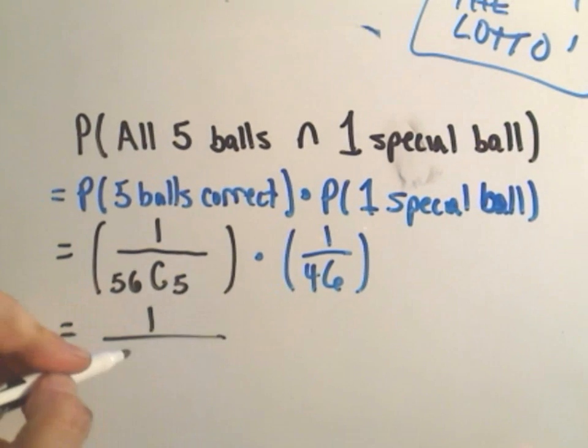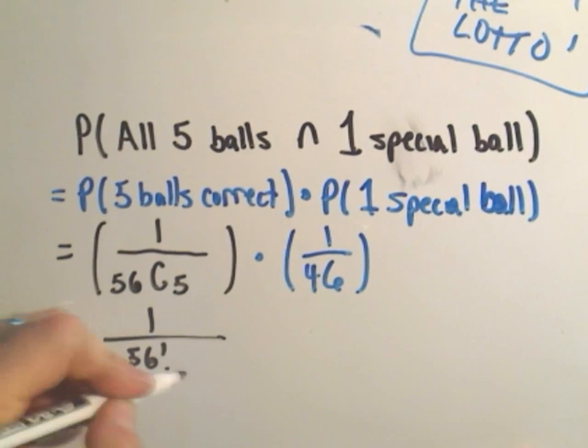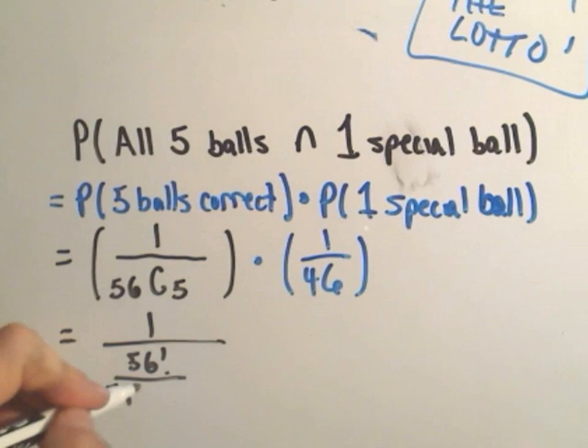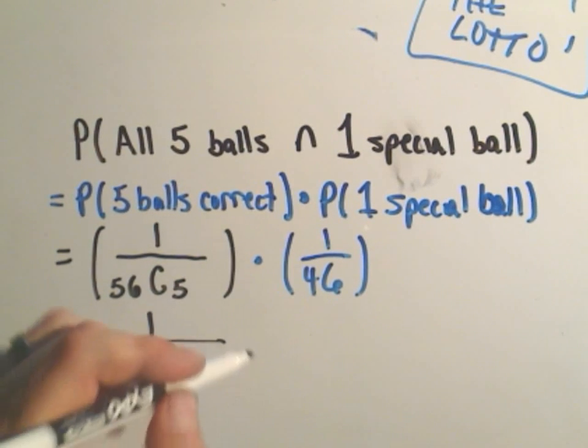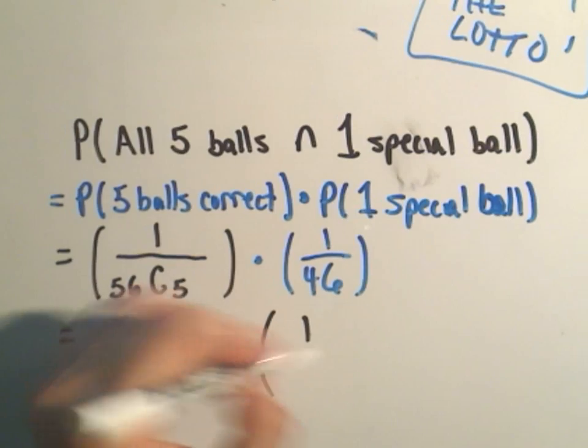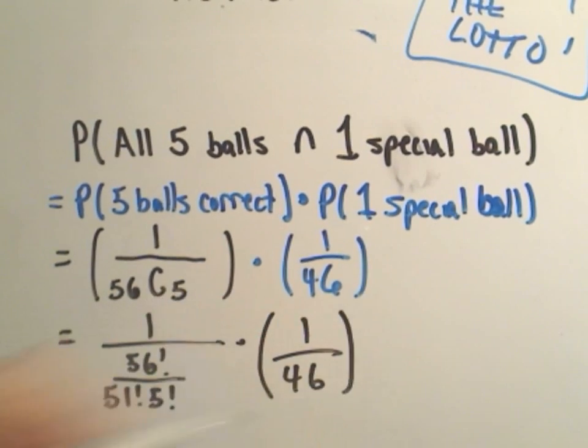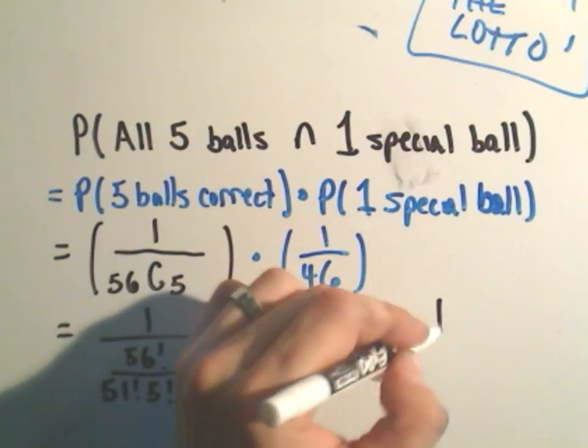the 1 over 56 choose 5, that's 56 factorial divided by 51 factorial times 5 factorial. So you may want to look at my combinations video if you haven't seen this just yet. But I calculated,